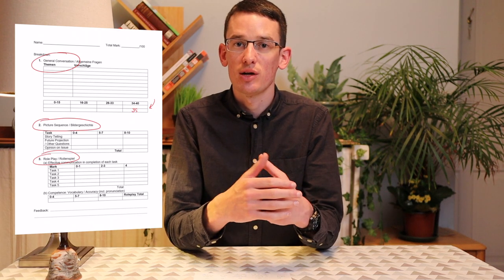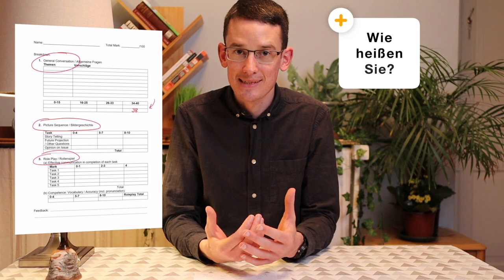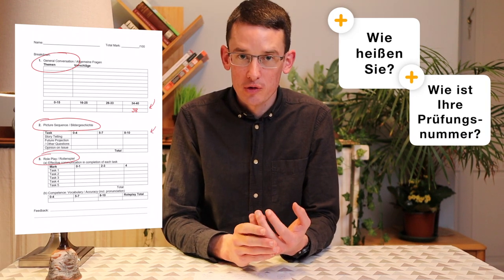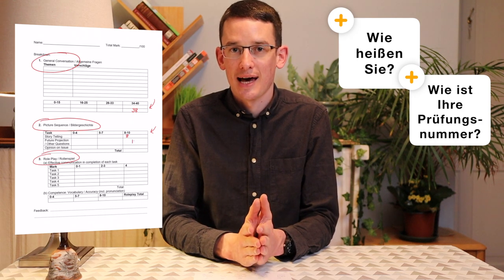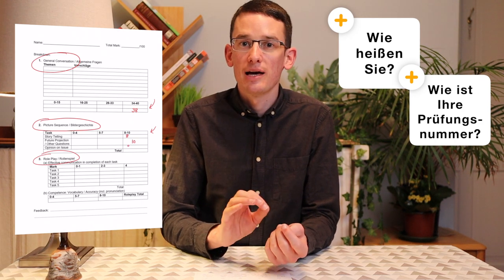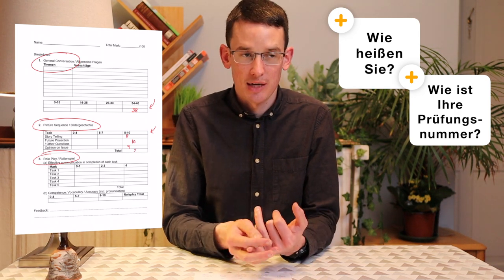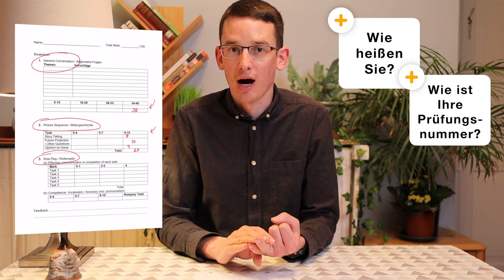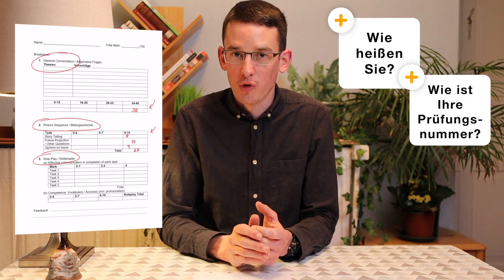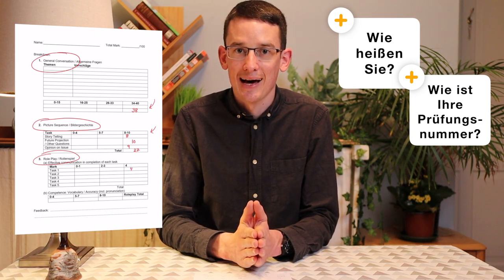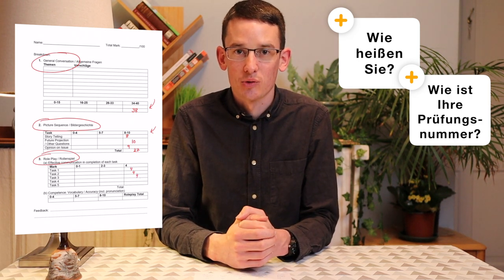The general questions you'll get at the start of the exam will be 'Wie heißen Sie?' and 'Wie ist Ihre Prüfungsnummer?' When answering the second question, be clear and concise. Have it well rehearsed. Say 'Meine Prüfungsnummer ist' and then read out the six digits. Be careful with the numbers zero through nine and make sure you pronounce them accurately.